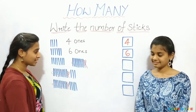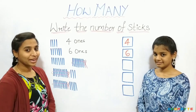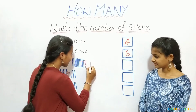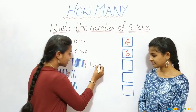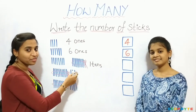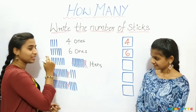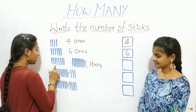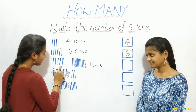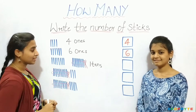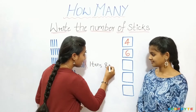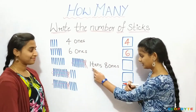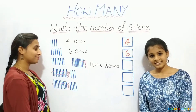Six sticks. We already have a bundle here. Bundle means it is of ten sticks. We will write one tens as this is one bundle of ten sticks. Now let us count these sticks. One, two, three, four, five, six, seven, eight. Eight sticks. That is eight ones. One, eight — eighteen. Let us write eighteen.